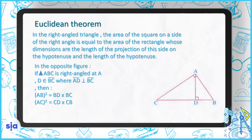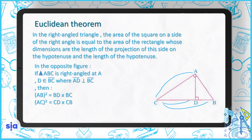We can express it as: AB² = BD × BC. And also for the other side: AC² = CD × CB.